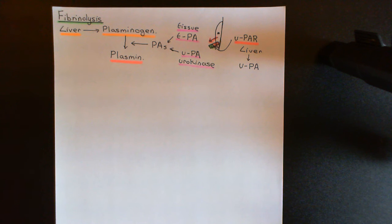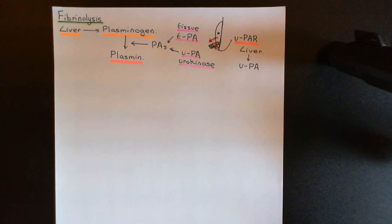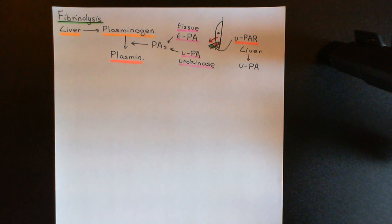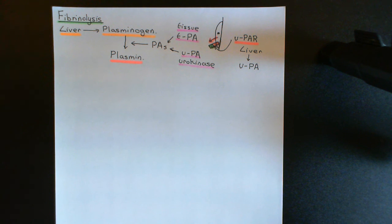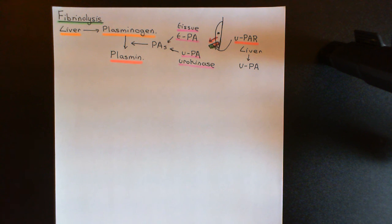So this is how we dismantle blood clots and initiate the dismantling of blood clots. This brings us to the end of this video on haemostasis. There is a follow-on video which will continue straight on from this, entitled Anticoagulants and Thrombolytics, where we'll cover the exogenous pharmacology — drugs that have an anticoagulant effect to prevent pathological blood clots from forming, as well as thrombolytics, which are drugs that can promote fibrinolysis. So if a patient has a thrombus blocking a blood vessel in the heart or brain, you can give a thrombolytic to break down that blood clot. Thank you very much.